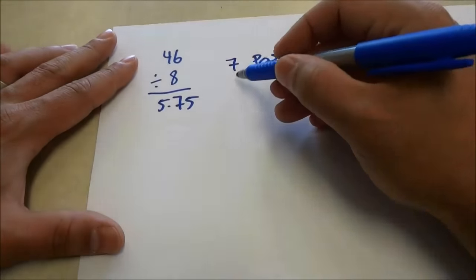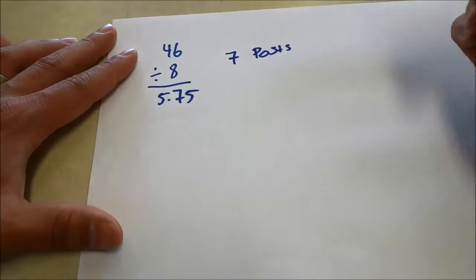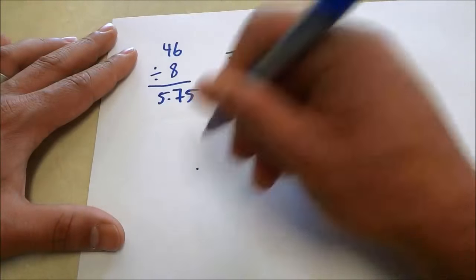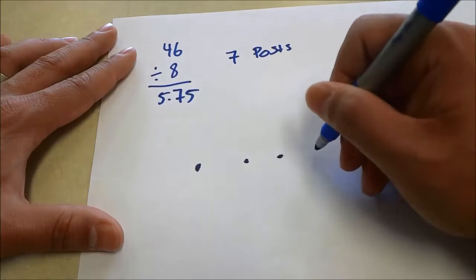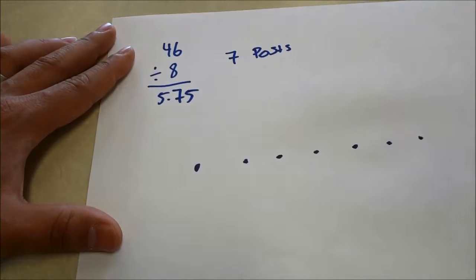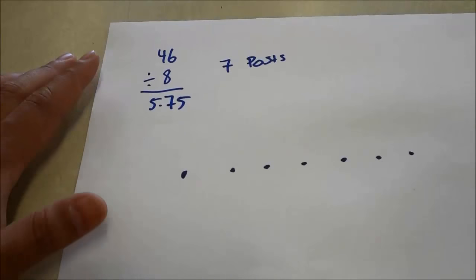Now what you're going to do is you're going to draw the number of posts on a sheet of paper. This is post one. We'll just draw the circles bigger. One, two, three, four, five, six, seven. All right.